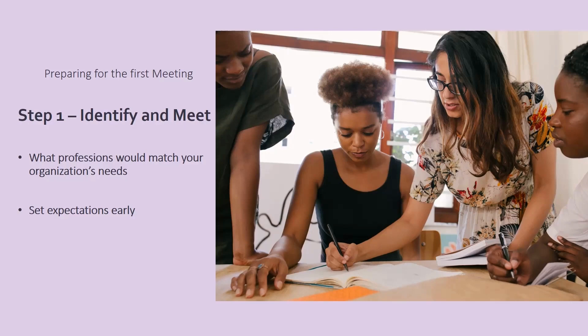The next thing you want to do is set your expectations early. When you talk to these individuals about being a member of your board, let them know that you expect them to give. Board members must financially donate to your organization. It's not enough just to volunteer — they also need to give, whether monthly, quarterly, or annually. They must volunteer too, but they must give. So if you have someone that just wants to volunteer, you may not want to have that person on your board. All help is wanted and needed, but that person may just not make a great board member.